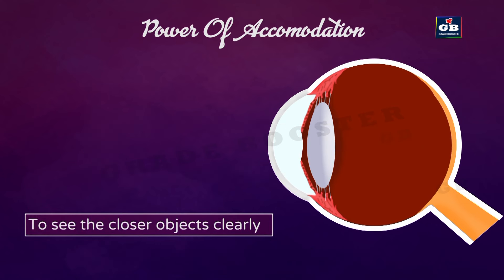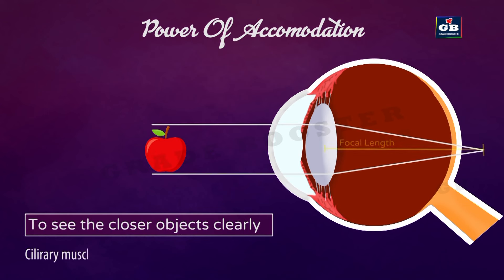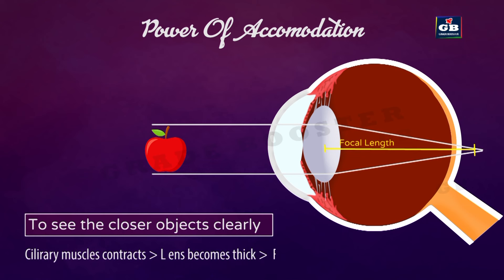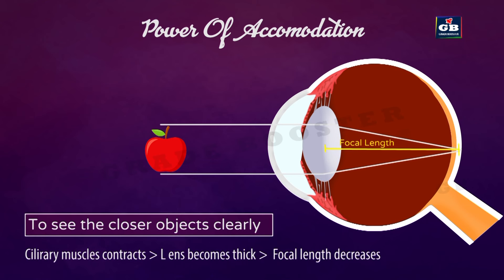To see objects closer to the eye, the ciliary muscles contract, which increases the curvature of the eye lens. The eye lens becomes thicker and the focal length decreases. This enables us to see nearby objects clearly.